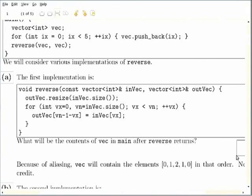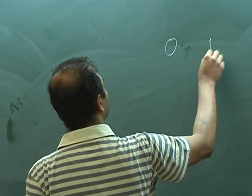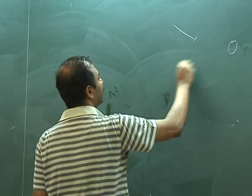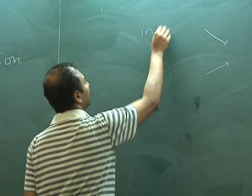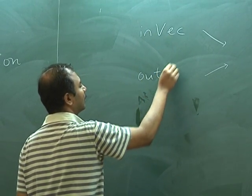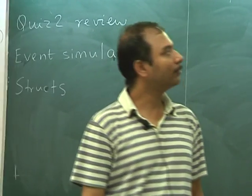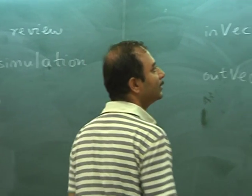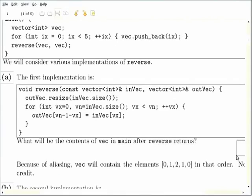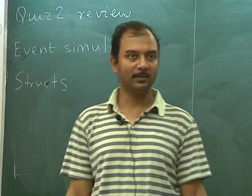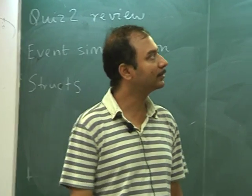So what happens is invec is 0, 1, 2, 3, 4. And in this case both invec and outvec are references to the same vector. Now if you study the code, the first thing that happens is outvec is resized to invec size. And because outvec and invec are the same that has no effect at all. It just preserves the original size of the vector, nothing else changes.